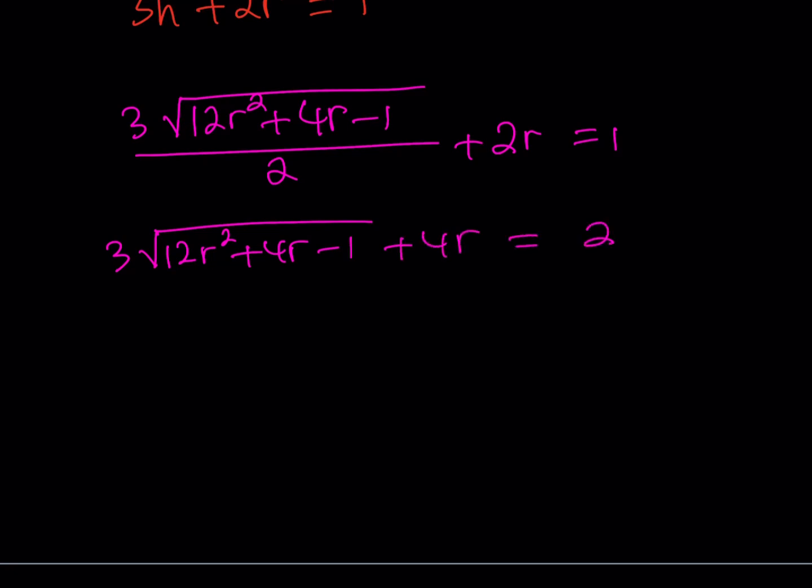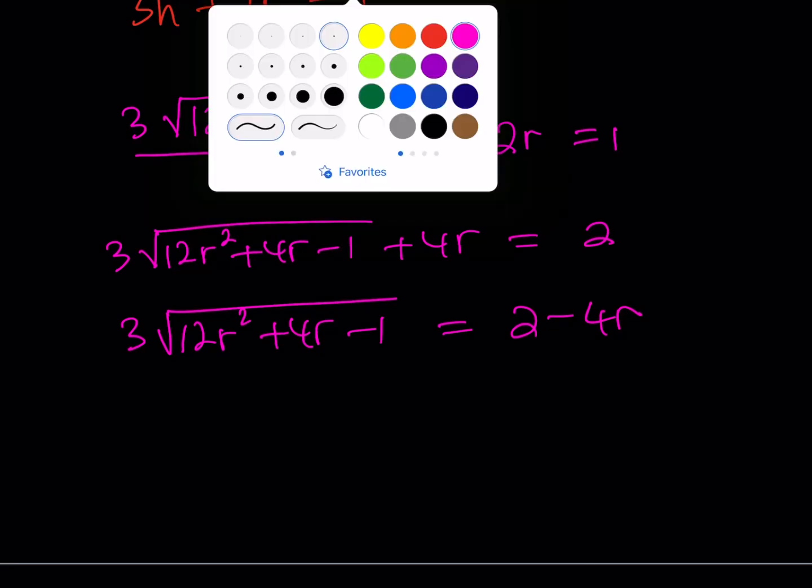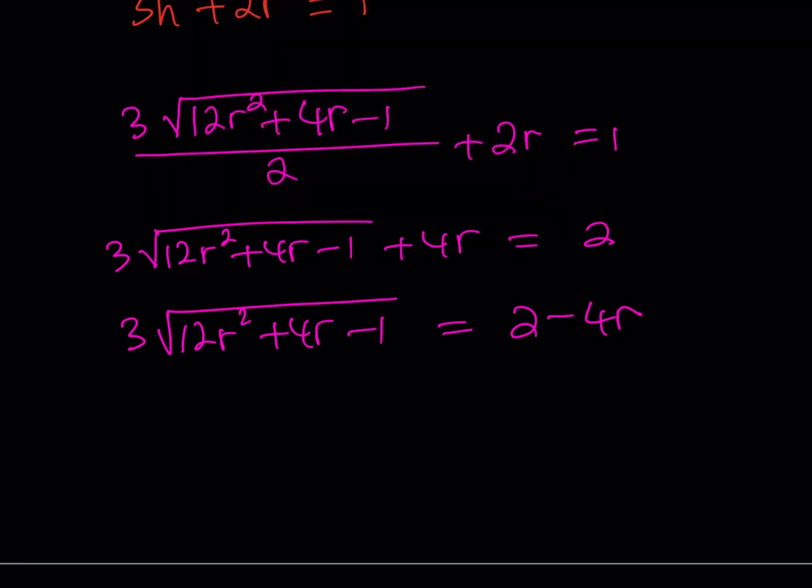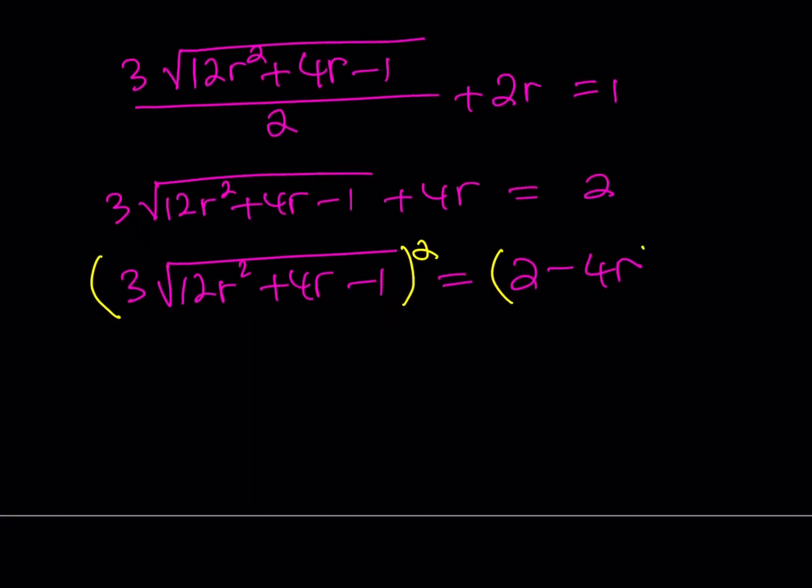Now, the next step is going to involve getting rid of the radical. So we're going to isolate that on the left-hand side. And what we're going to do next is to get rid of the radical, we're going to square both sides. That's what we're going to do next. Let's go ahead and square both sides. But remember, when you square both sides, then you get some extraneous solutions, which we're going to check at the end.